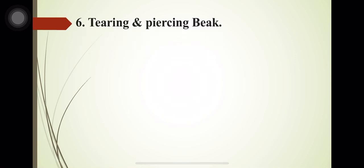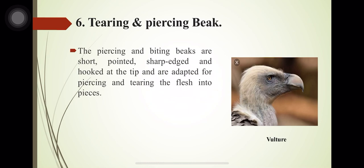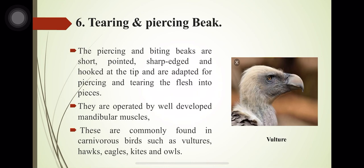The tearing and piercing beak occurs in vultures. These beaks are short, pointed, sharp-edged and hooked at the tip, adapted for piercing and tearing flesh. They are operated by well-developed mandibular muscles and are commonly found in carnivorous birds such as vultures, hawks, eagles, kites and owls.